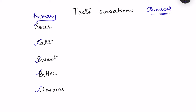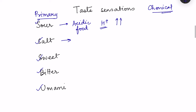Sour is caused by acidic foods, and the sourness depends on the concentration of hydrogen ions present in the food — as the hydrogen ion concentration increases, the sourness increases. Salty taste is caused by ions, basically cations like sodium ions and even potassium ions. Depending on the cation present, the saltiness of that particular food item will differ. Normally we use NaCl as salt, but other food items also have saltiness depending on the cations present.